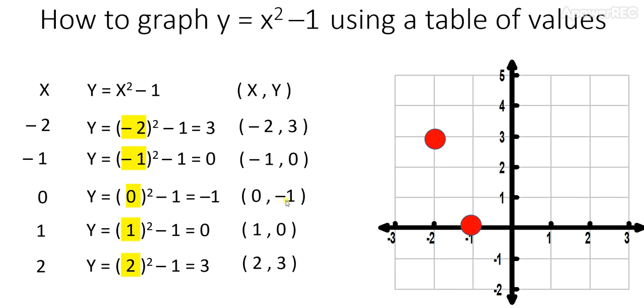To plot 0 comma negative 1, we start at the origin, go down one unit, and plot your point. To plot 1 comma 0, start at the origin, go one across to the right, and then plot your point.